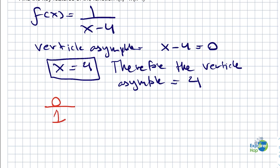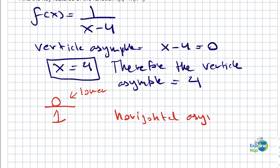Since the power of x is 1 and there is no variable in the numerator, therefore it's 0. Now that we have that, we know that the numerator degree is lower than the denominator. And from the lesson we have learned, when that happens, the horizontal asymptote is always 0, or y equals to 0.